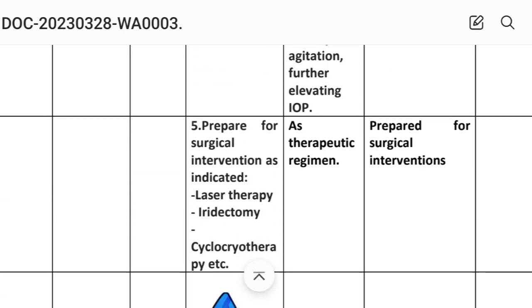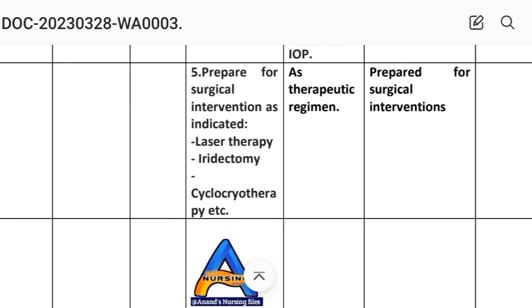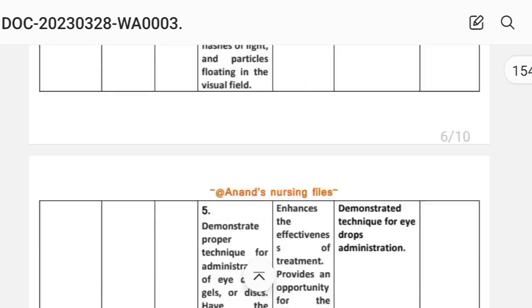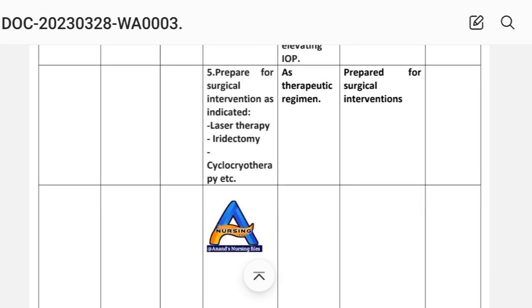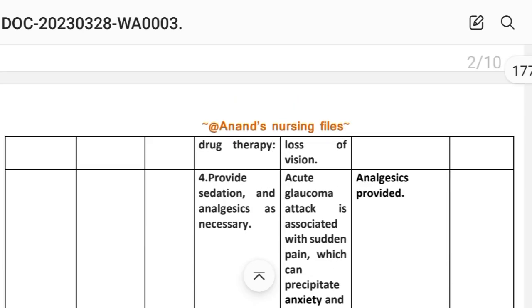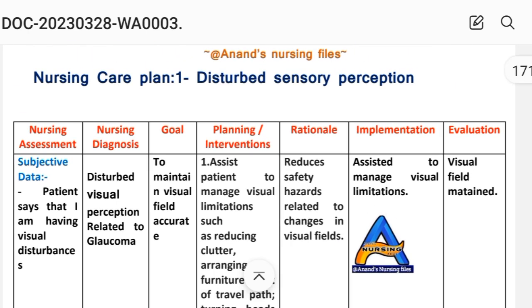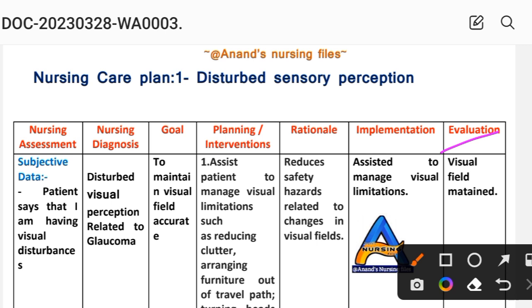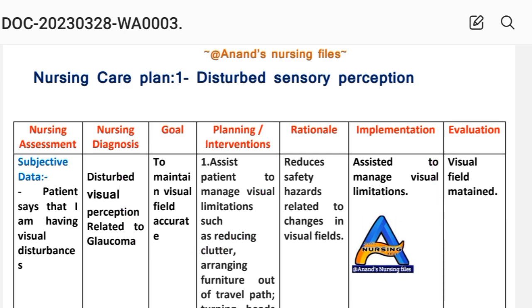Fifth intervention: prepare for surgical interventions as indicated — for example, laser therapy, iridectomy, cyclocryotherapy, etc. Rationale: as per therapeutic regimen. Implementation: prepared for surgical interventions. Evaluation for Care Plan 1: visual field maintained. The goal was to maintain the visual field accurately, which has been achieved through these interventions.